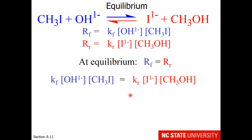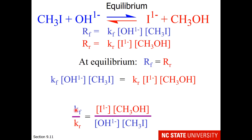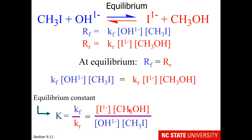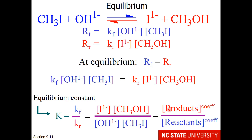Setting the expressions equal to one another and rearranging, the ratio of the forward rate constant divided by the reverse rate constant is equal to the equilibrium constant. We represent the equilibrium constant with a capital K; rate constants use lowercase k. Another way to express the equilibrium constant is the product concentrations raised to their coefficients divided by the reactant concentrations raised to their coefficients — products divided by reactants.